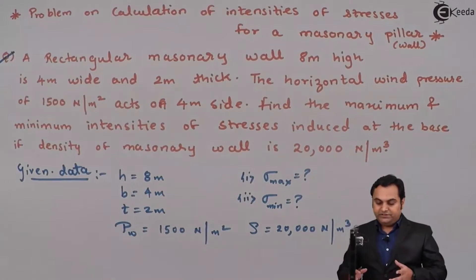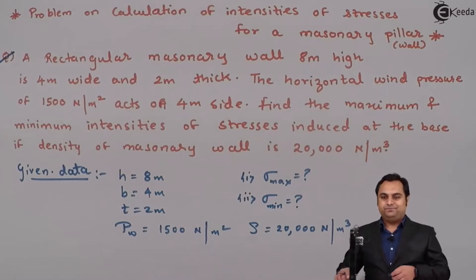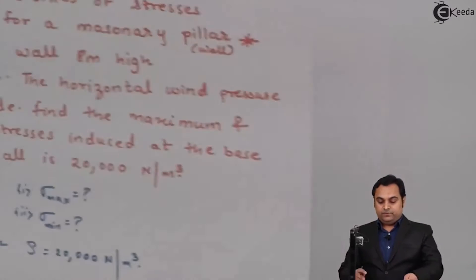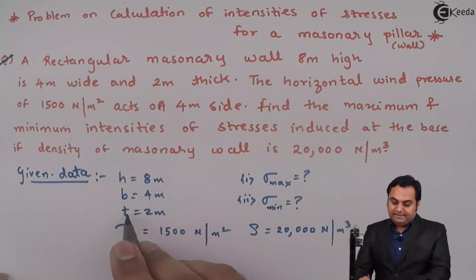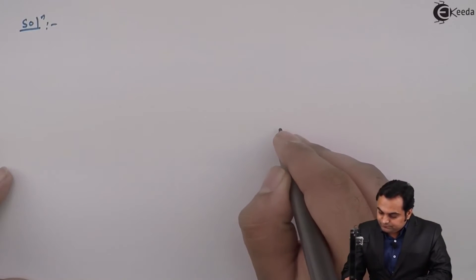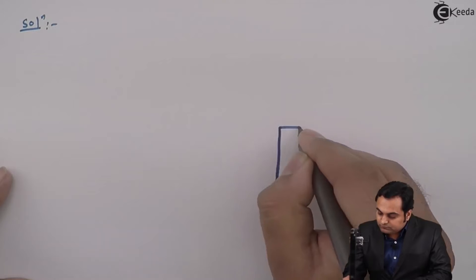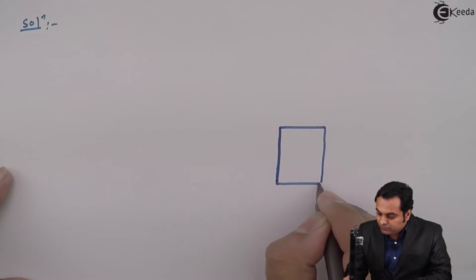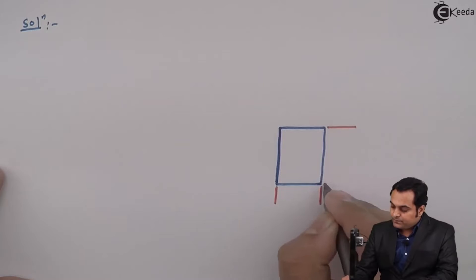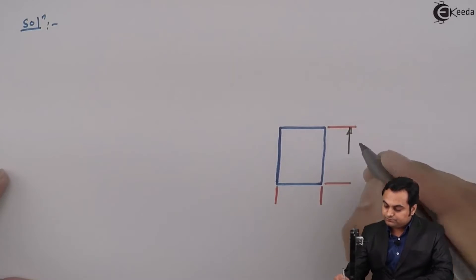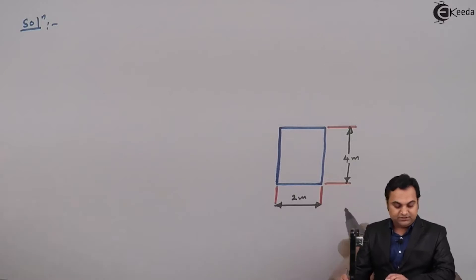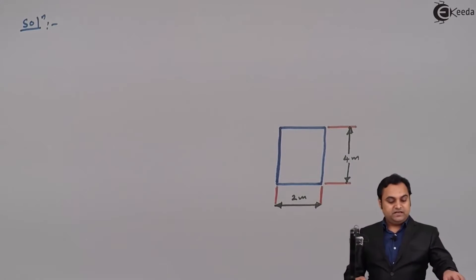In the solution part, I'll first draw the diagram of the masonry wall. The cross-section is denoted by B and T, where width is 4 meter and thickness is 2 meter. I am drawing the diagram of that masonry pillar or masonry wall — it is 4 meter wide and 2 meter thick. This masonry wall has a height of 8 meter as given in the problem.